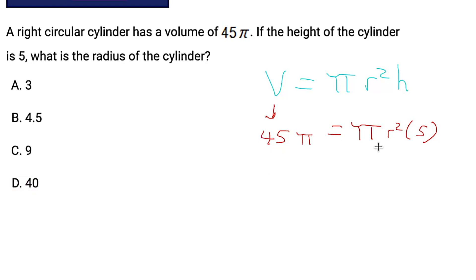Now, speaking of shortcuts, we could take care of this pretty quickly by dividing by 5 pi all at once, because we want to get rid of the pi, and we want to get rid of the 5, right? So you could totally divide by pi, then divide by 5, but let's just see what it looks like if we do it all at once. Our pi's would disappear, and then 45 divided by 5 is 9. So we get 9 equals r squared. Take the square root of both of those, and then r equals 3, right? Because the square root of 9 is 3, so our answer is A.